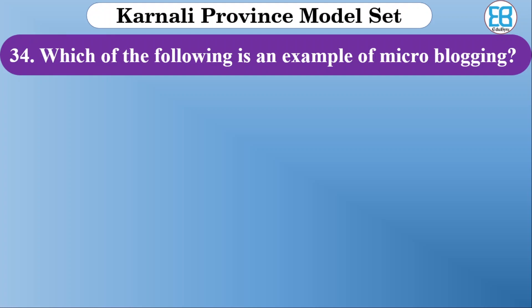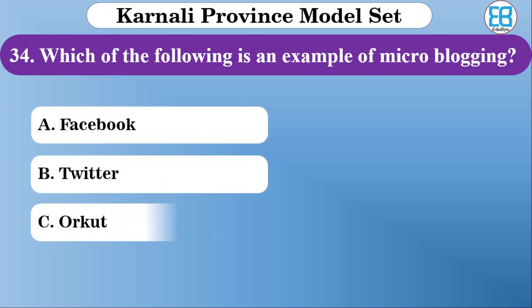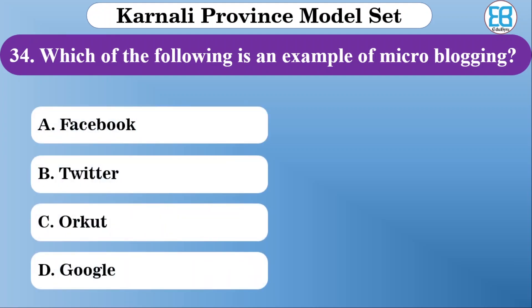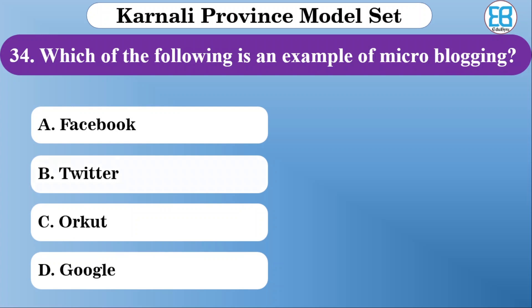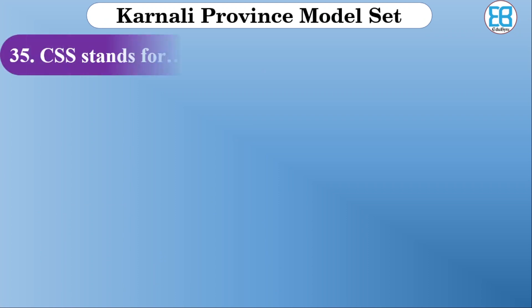Which of the following is an example of micro-blogging? The options are Facebook, Twitter, and Google. The correct option is Twitter — Twitter is an example of micro-blogging.